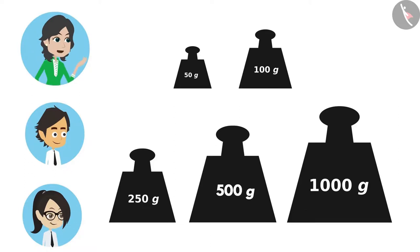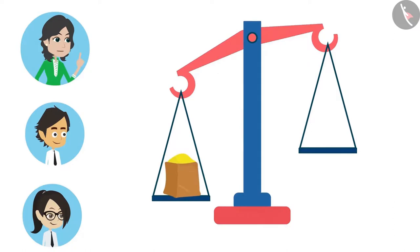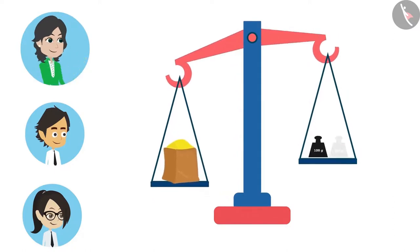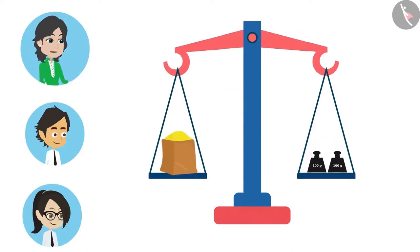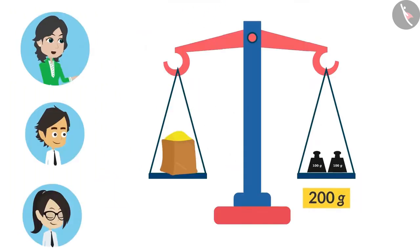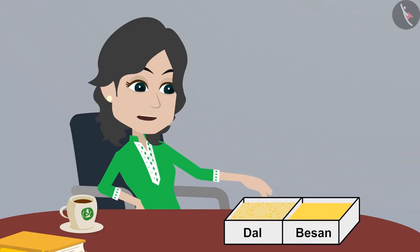Look, the thing you want to measure is kept on one side of the scale and one or more weights depending upon the requirement on the other side. When both sides are in balance, this means that the weight on both sides are equal. When both sides are equal, we calculate the weights added.